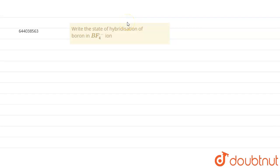the state of hybridization of boron in BF4 minus ion. First of all, we have to draw the BF4 minus ion. Boron has three electrons, one negative charge is on the boron, then if we make the structure